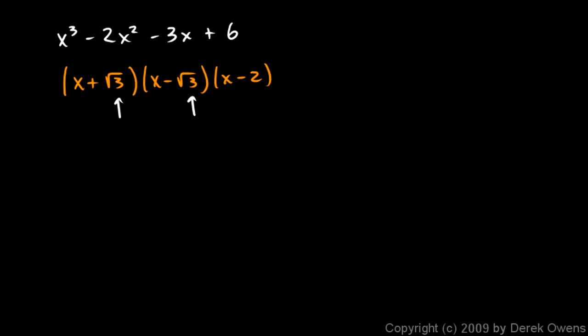So if we list the zeros for this polynomial, they would be -√3, the positive √3, and 2. We see that some of these zeros here are irrational numbers. Now if we were to take this polynomial and apply the Rational Zeros Theorem, let's see what that tells us.